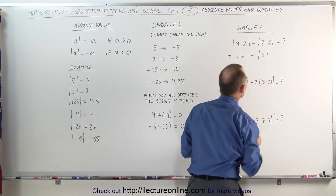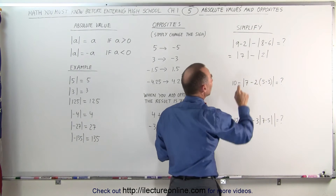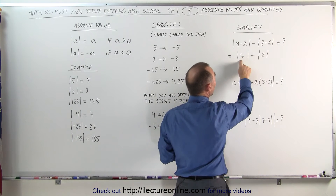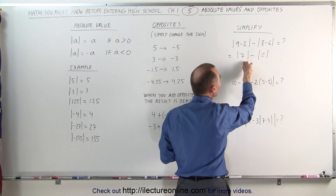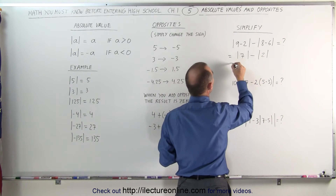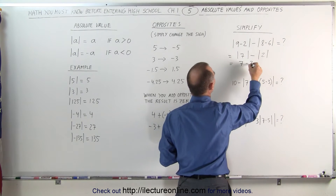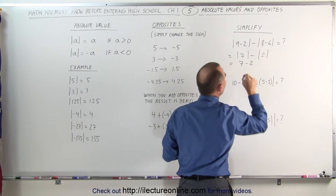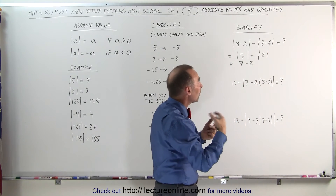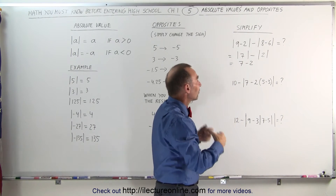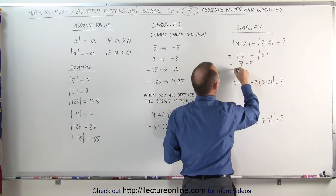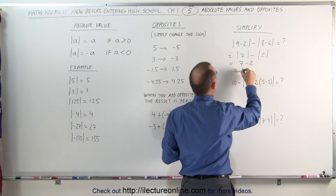Now you take the absolute value symbols away. If the result inside is negative, you turn it to a positive. If it's already positive, it remains positive. So the absolute value of 7 is 7, and the absolute value of 2 is 2. You simply remove the absolute value symbols, leaving 7 minus 2, which equals 5.